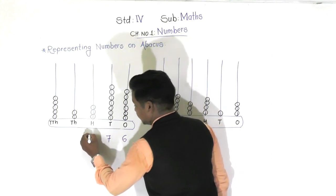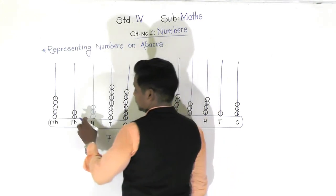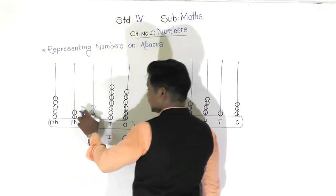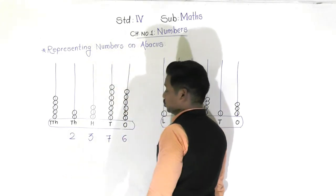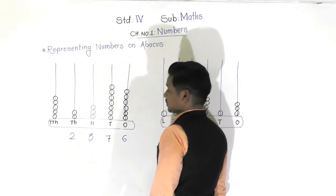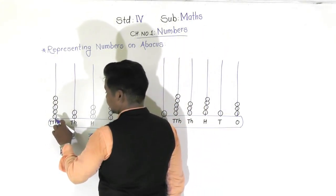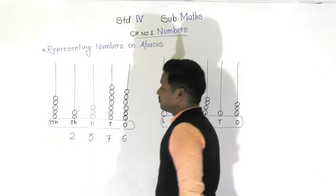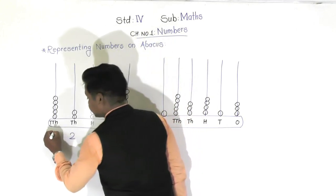Then in the spike of hundreds place there are three beads, so it represents the digit three - three hundreds. Then there are two beads in the spike of thousands, so it represents the digit two, that is two thousands. And in the spike of ten thousands there are one, two, three, four, and five beads.